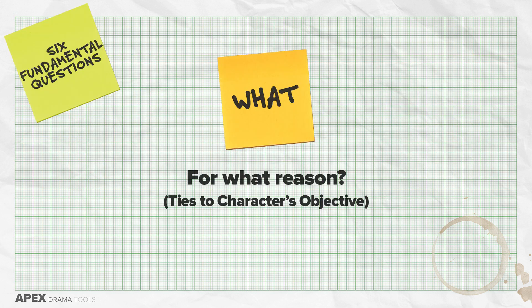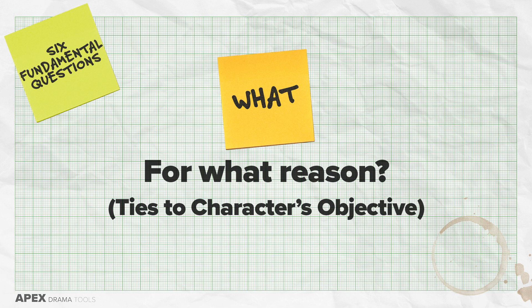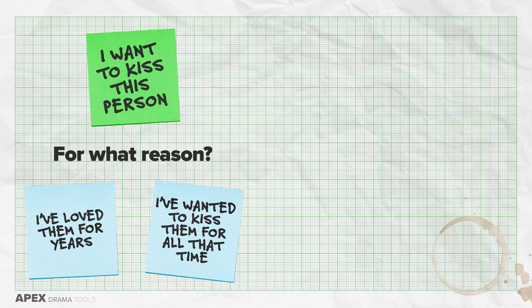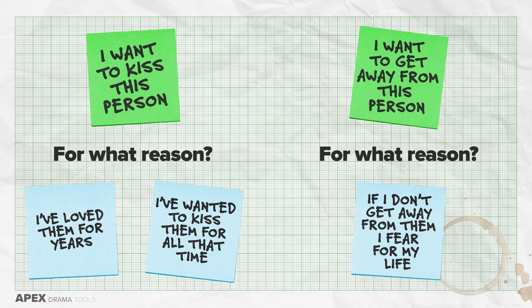The fifth question, what, has been interpreted in a few ways. The most beneficial version is: for what reason? This ties to the objective, the previous question of why. With 'what,' we dig deeper into our objective and create a deeper reason for what our character needs. For example: 'I want to kiss this person — for what reason? I've loved them for years.' Or 'I want to get away from this character — for what reason? If I don't get away from them, I fear for my life.' The 'what' impels you into action, forces you to consider the future consequences of your objective and what will happen if you succeed or fail in achieving it.